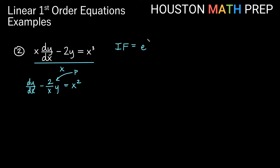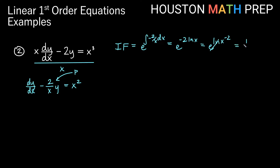So our integrating factor is e to the integral of negative 2 over x dx. This is a log rule, giving us e to the negative 2 ln of x. Bumping the negative 2 up as an exponent gives e to the ln of x to the minus 2. Since e to the ln reduces, x to the negative 2 is 1 over x squared. So our integrating factor is 1 over x squared.